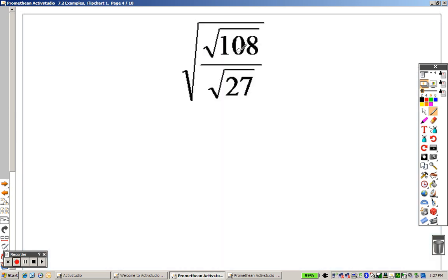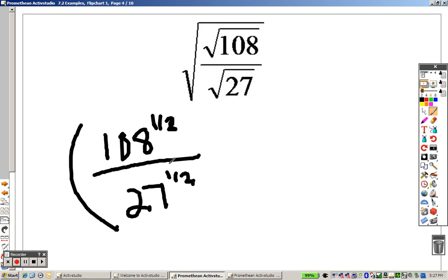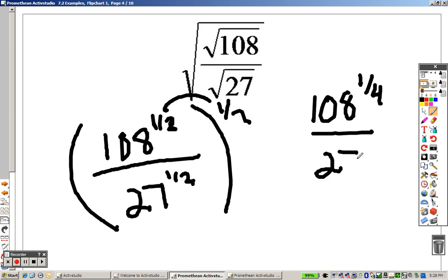Okay, the next problem. The square root of the square root of the square root. Well, the only way I can think of to do a problem like this would be to basically rewrite everything. So it would be 108 to the 1 half power, because remember, a root's like saying 1 half over 27 to the 1 half power. I could also then take all of that to the 1 half power as well. I could distribute that through and get 108 to the 1 4th and 27 to the 1 4th.